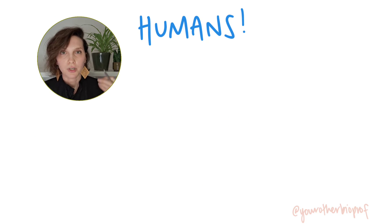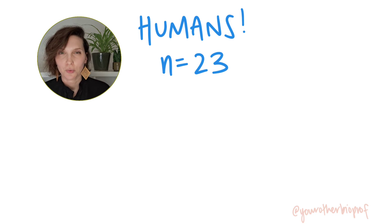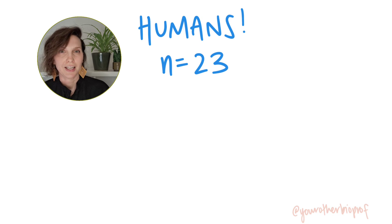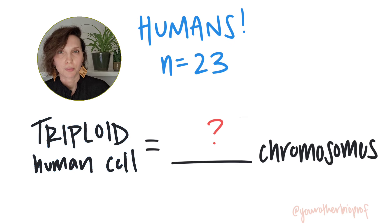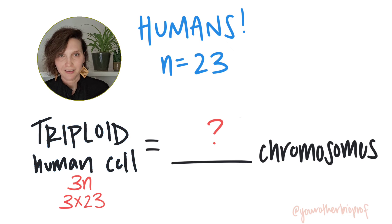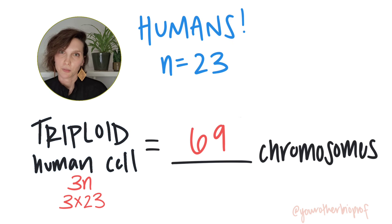Triploidy in humans is rare and it is fatal. Recalling that the haploid number n in humans is 23, how many chromosomes would you expect to find in a human cell with triploidy? 3n — three times 23 — would be a total of 69 chromosomes.